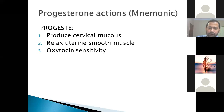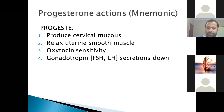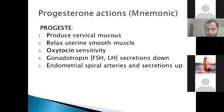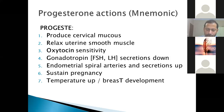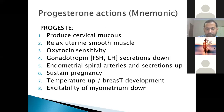Oxytocin sensitivity increases with progesterone therapy. Gonadotropin secretion decreases, and LH is produced in decreased amounts. Endometrial spiral arteries and secretions increase. Progesterone also increases body temperature by about 0.5 degrees Celsius and promotes breast development. The excitability of the myometrium decreases. There is a mnemonic to remember all the progesterone-related physiological effects.